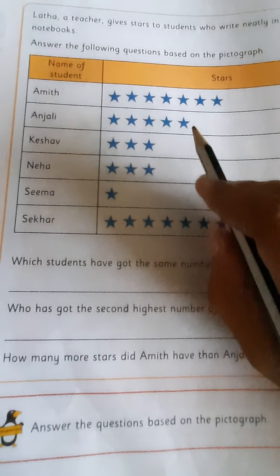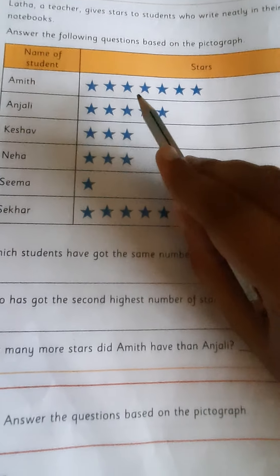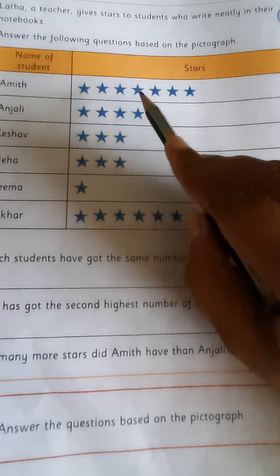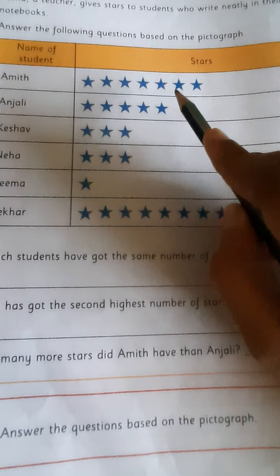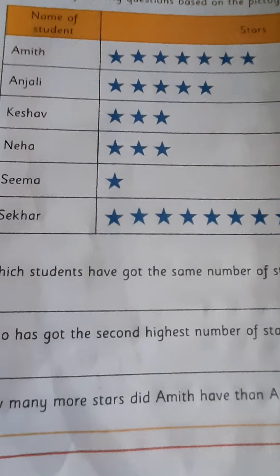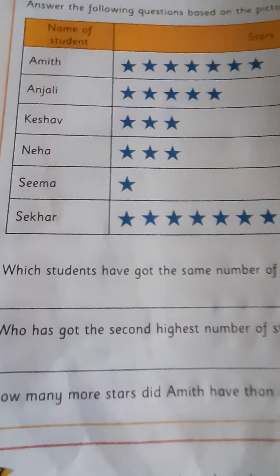First, Amit got how many stars? 1, 2, 3, 4, 5, 6, 7. So Amit got 7 stars.